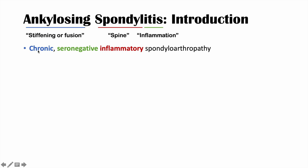It's chronic because it's a long-lasting condition. It's seronegative because if we look at blood work, rheumatoid factor is negative. It's inflammatory because this involves inflammation of the joints. Spondyloarthropathy means disease of the joint of the spine. And ankylosing spondylitis is a type of axial spondyloarthritis.